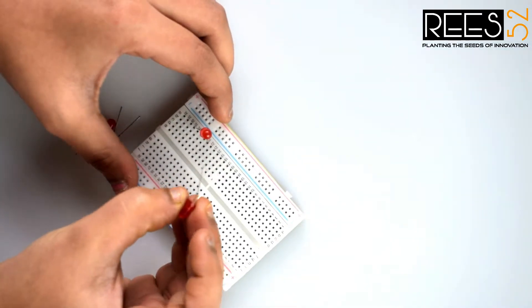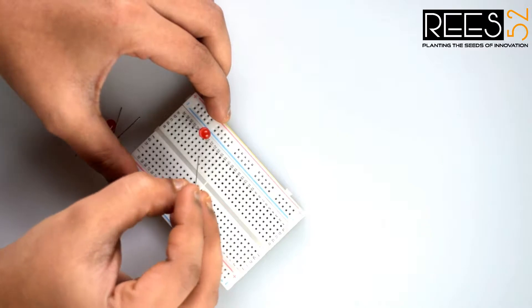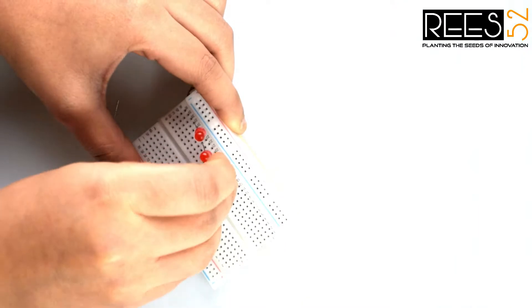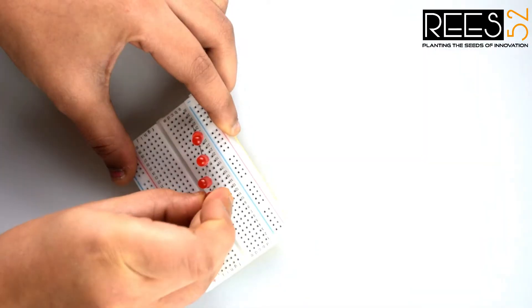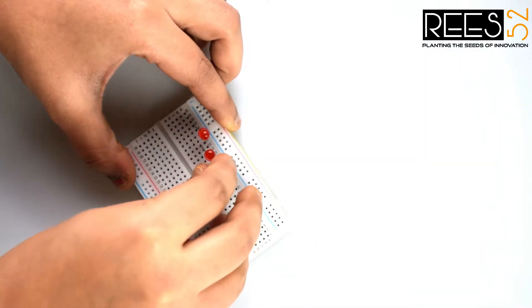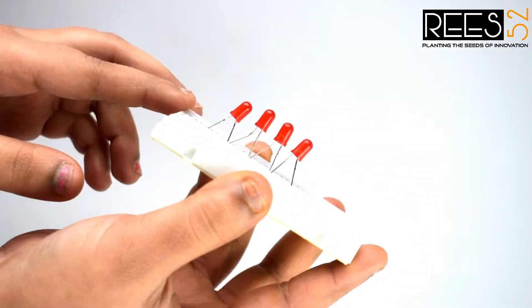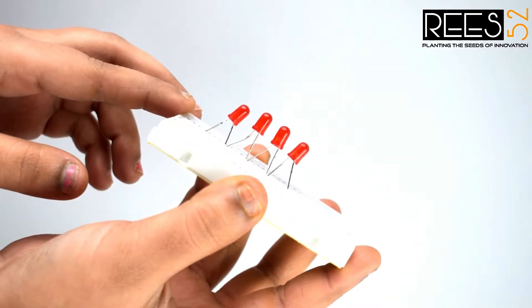Now connect the positive leg of the second LED to the ground leg of the first LED. Connect all LEDs to the ground like this.